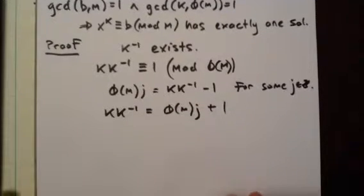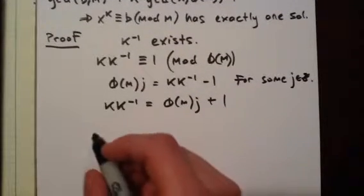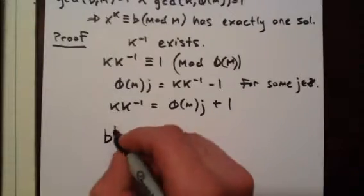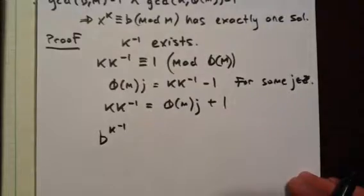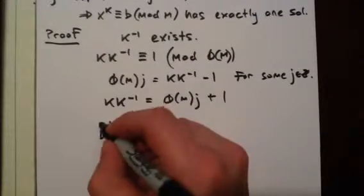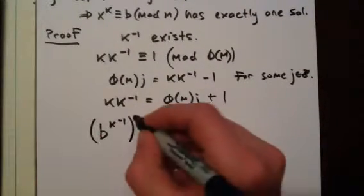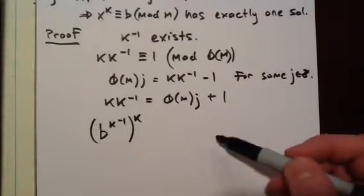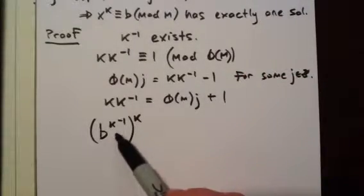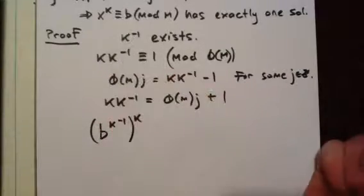Why did we do this? Because we're going to claim that b^(k^(-1)) is a solution to the equation x^k ≡ b (mod m). To show that, let's take it to the power of k. It's like x^k, and we'll show this is b, which will show that b^(k^(-1)) is a solution to x^k ≡ b (mod m).